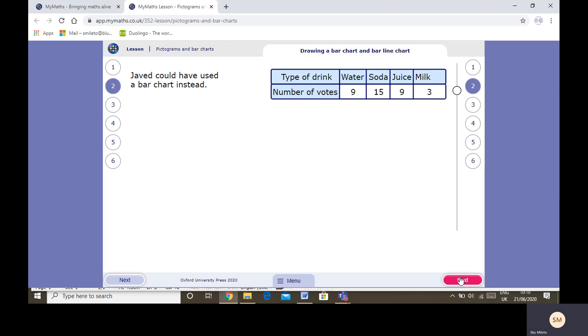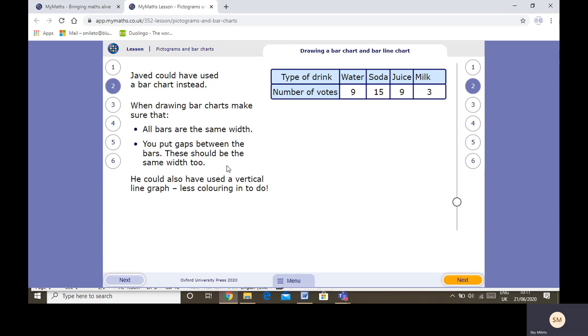Javid could have used a bar chart. When drawing a bar chart, you need to know all the bars need to be the same width. That means that they're the same size, the bars. It might not be the same height, obviously, because one would be shorter than the other, but they need to be the same width, same size lengthways. You put a gap between the bars, and that should always be the same width too, so make it nice and neat.